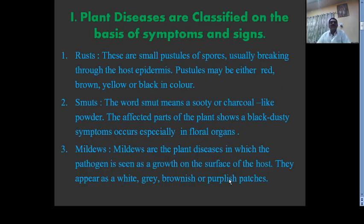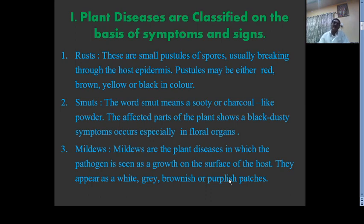Plant diseases are also classified on the basis of symptoms and signs seen on plants after infection. Number one is rust. Rust consists of small pustules of spores, usually breaking through the host epidermis. Pustules may be red, brown, yellow, or black in color and are raised from the surface. These colored pustules are produced by the fungus, showing its emergence through the epidermis.